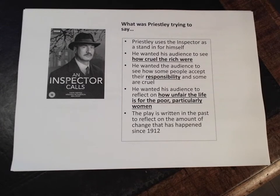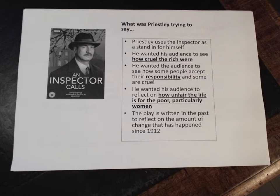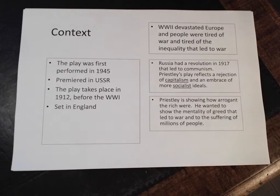Priestley wanted to show that we have a responsibility for one another. Classically it's Mr. Burling who feels that we don't, and the inspector who feels that we do, and Sheila and Eric move towards the inspector's position. He also wanted to show how really difficult and unfair the life of the poor was in 1912, particularly for women — Eva Smith in her pregnancy and the way she's treated. It's very crucial that she's a woman. He set the play in 1912, even though it was written in 1945, before the two major world wars, to show an arc of how much has really changed in that time.